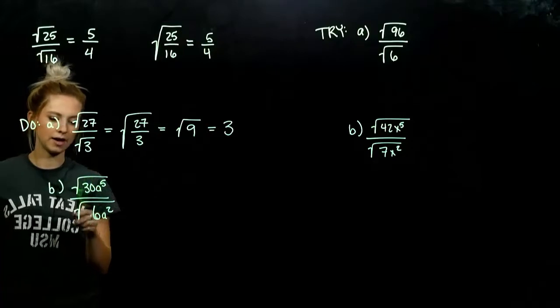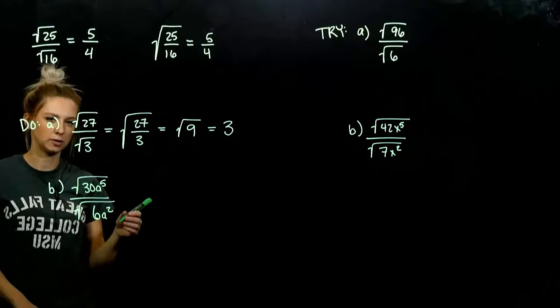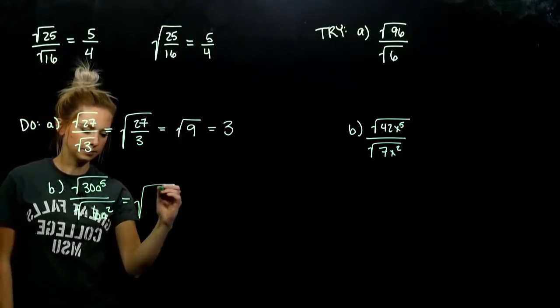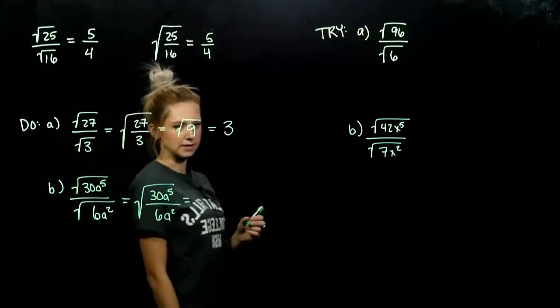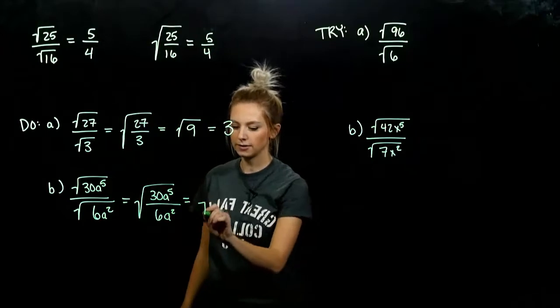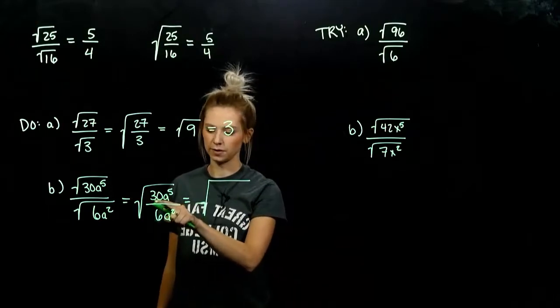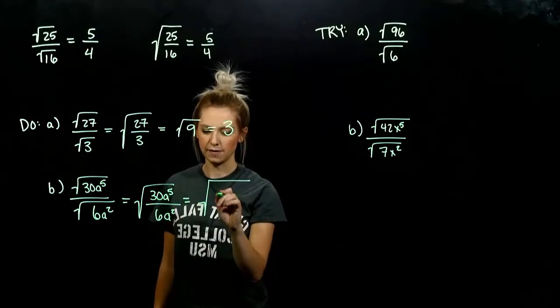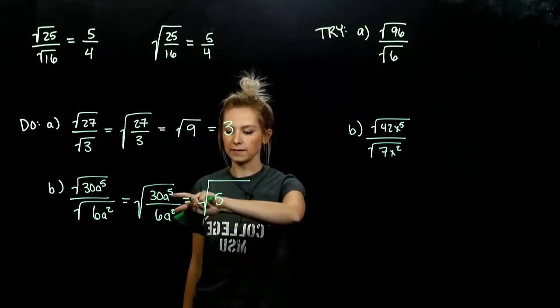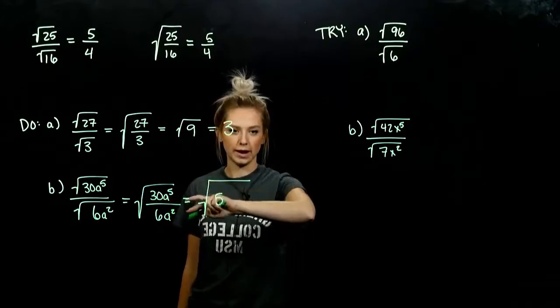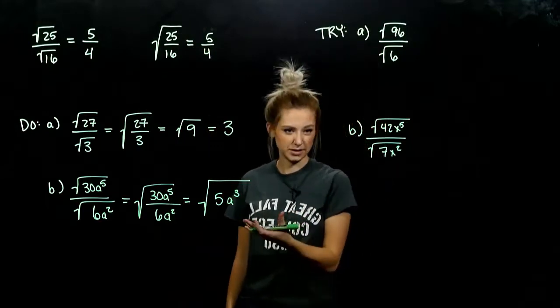Same thing for part B. If I try to evaluate square root of 30 individually and square root of 6 individually, it's going to be a little bit messy. But if we combine them, a little bit easier. So we need to simplify on the inside, underneath that radical. What is my constant term? Just between the coefficients. 30 divided by 6 gives me 5. And a5 divided by a2. When we have the same base and division, we subtract those exponents. So how many do I have left? 3 living up top.